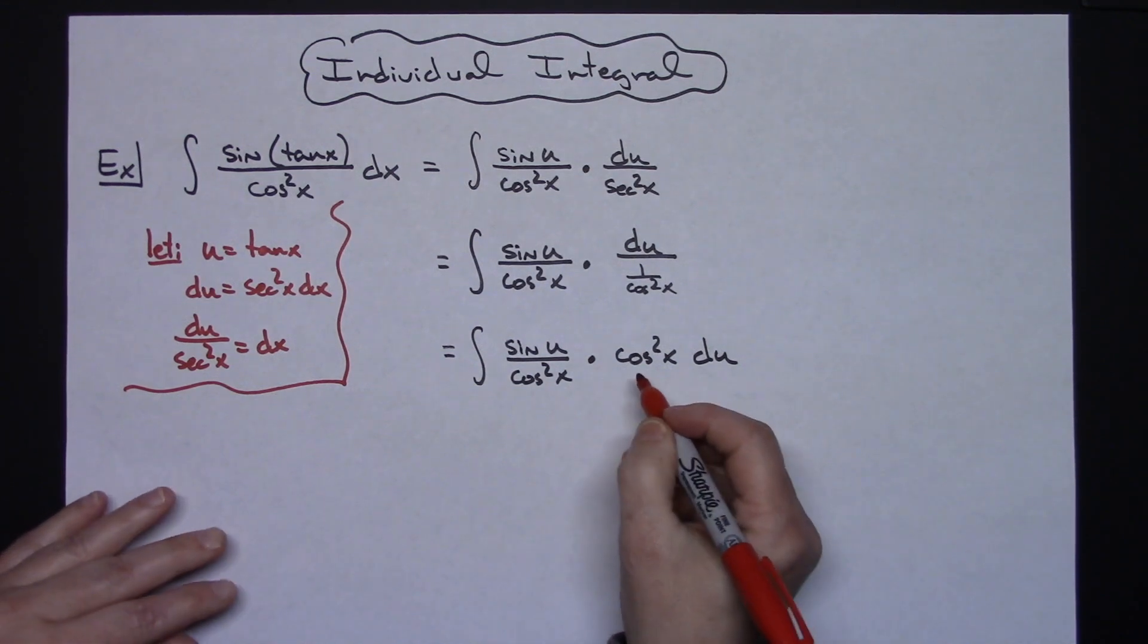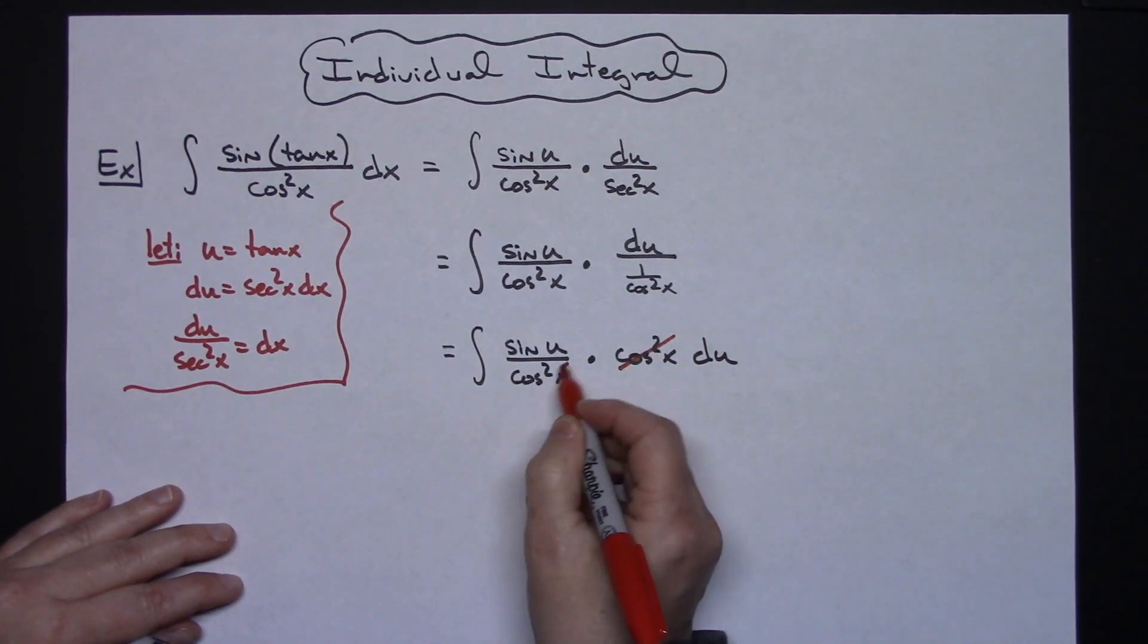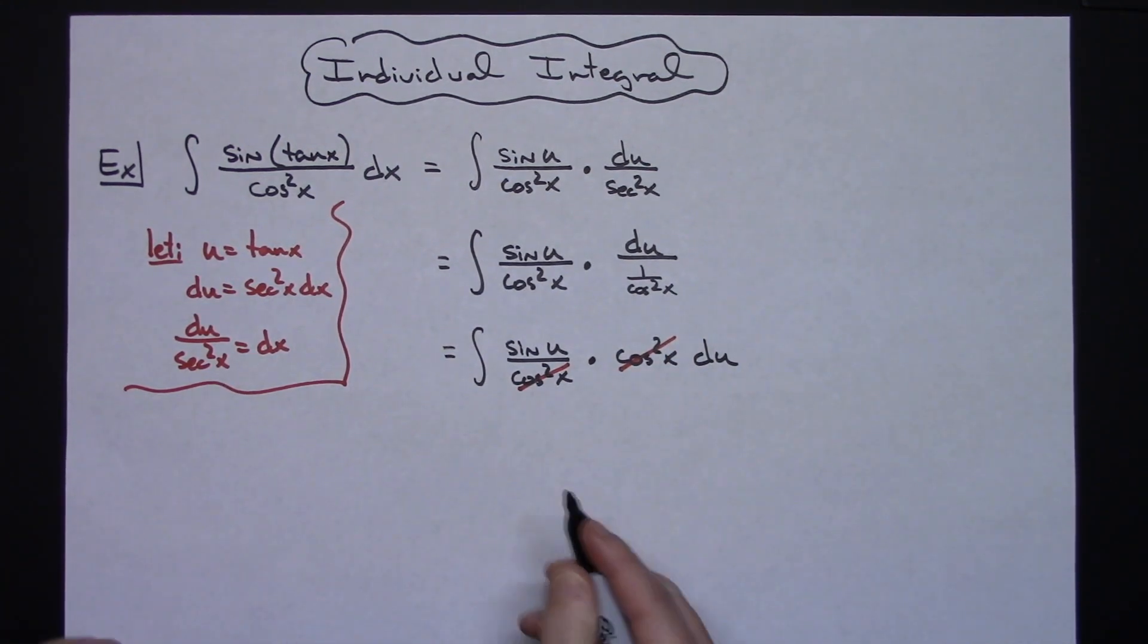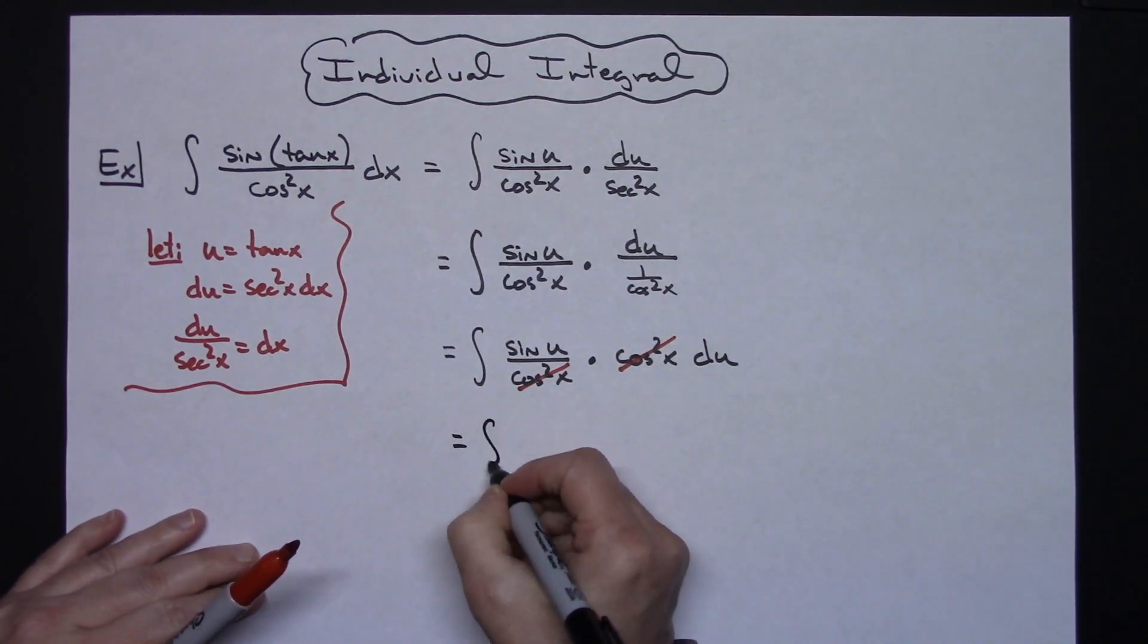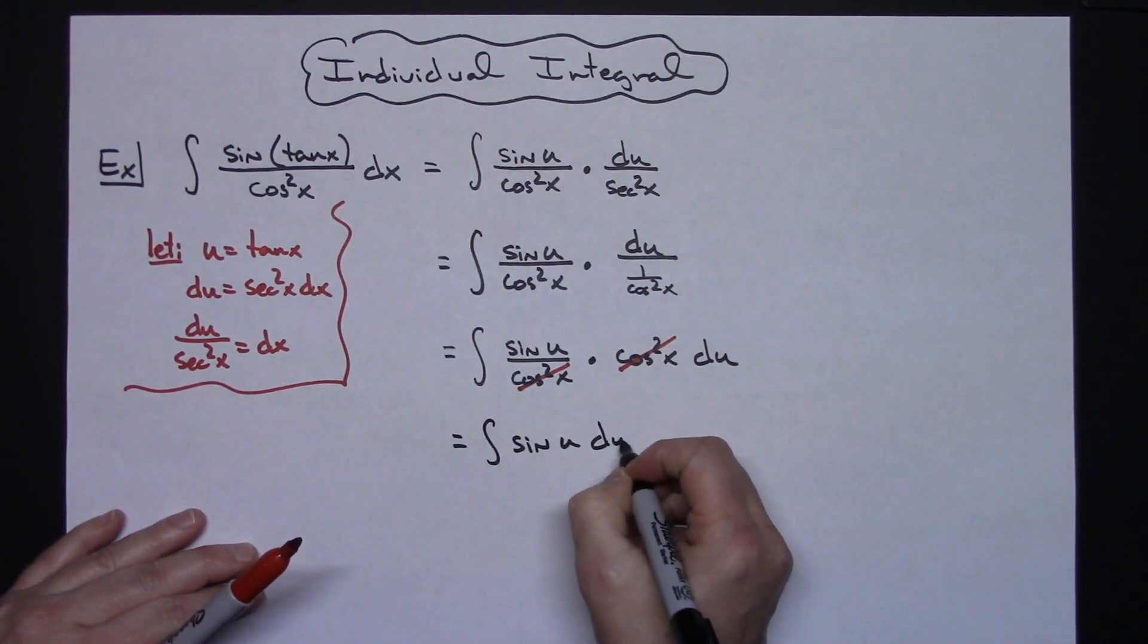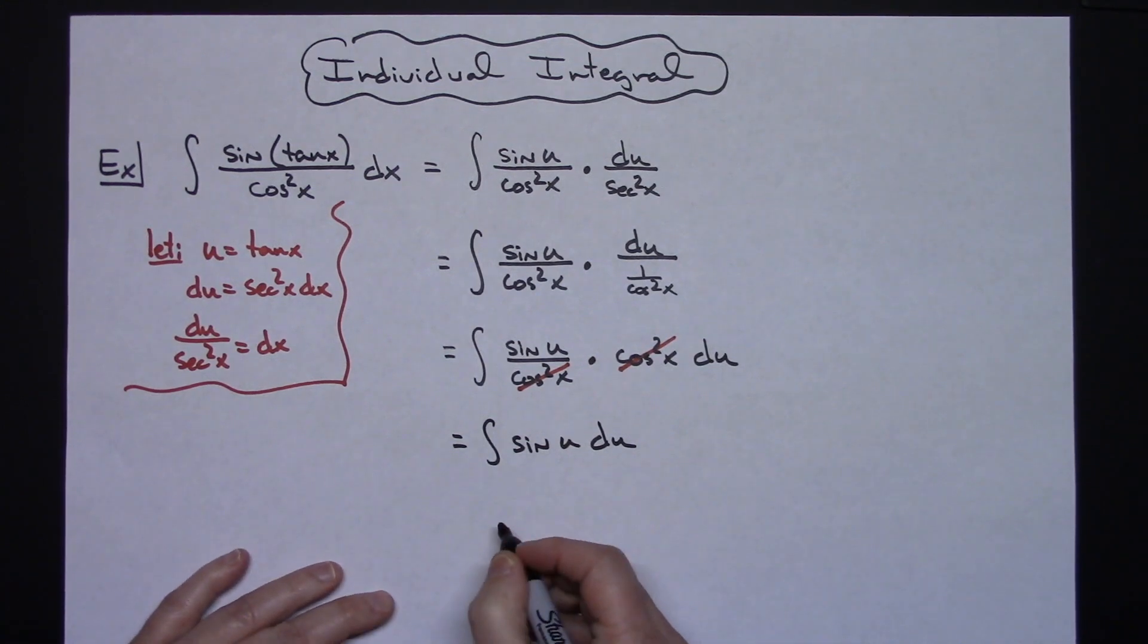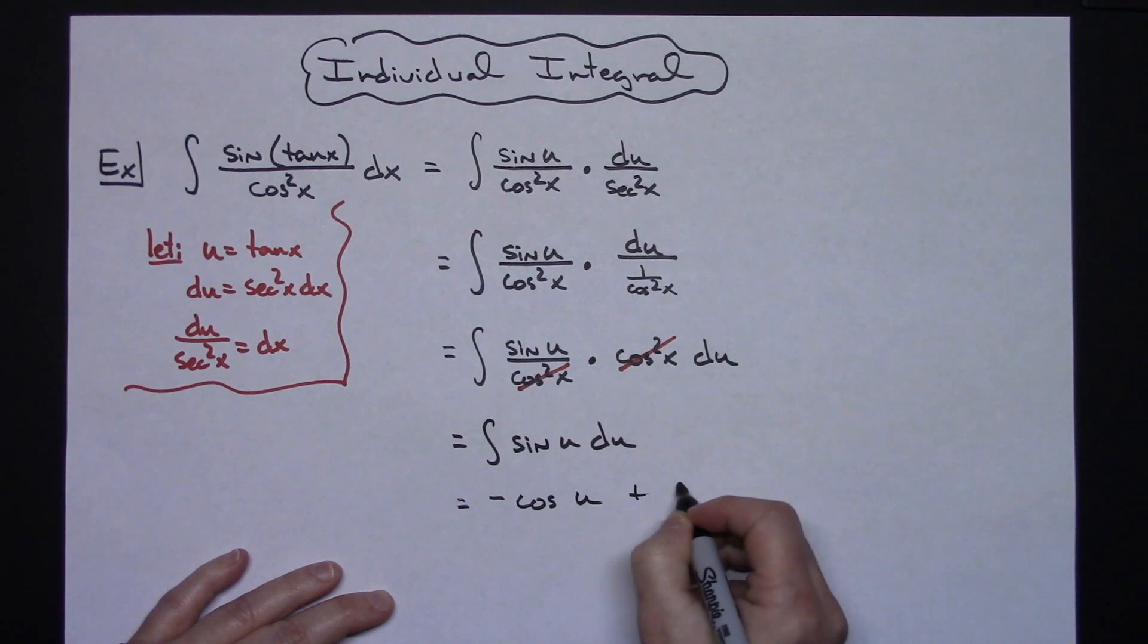That gets us to where we want, where we can now actually cross out those cosine squared x's, and it's going to leave us with the integral of sine u du, which is a straightforward integration. We'll have a negative cosine u plus c.